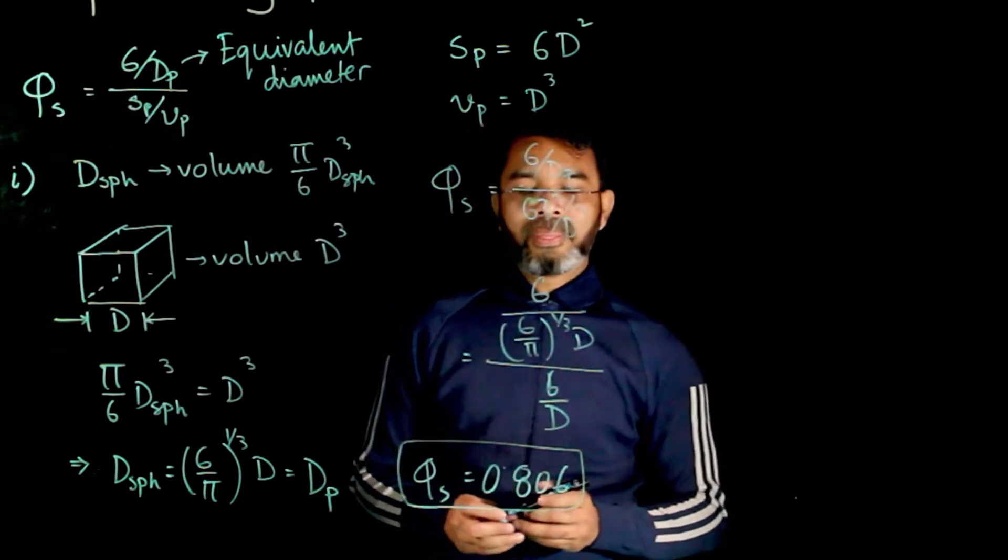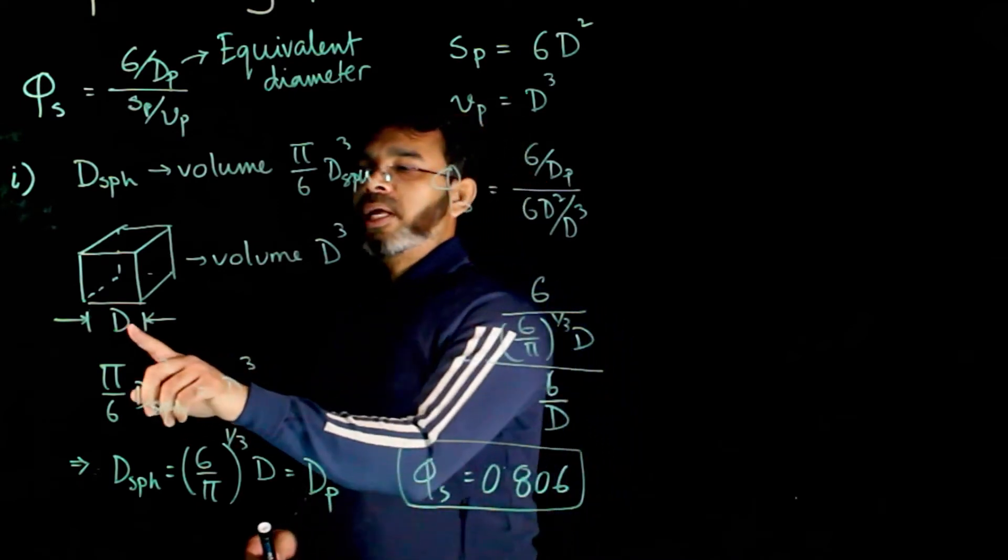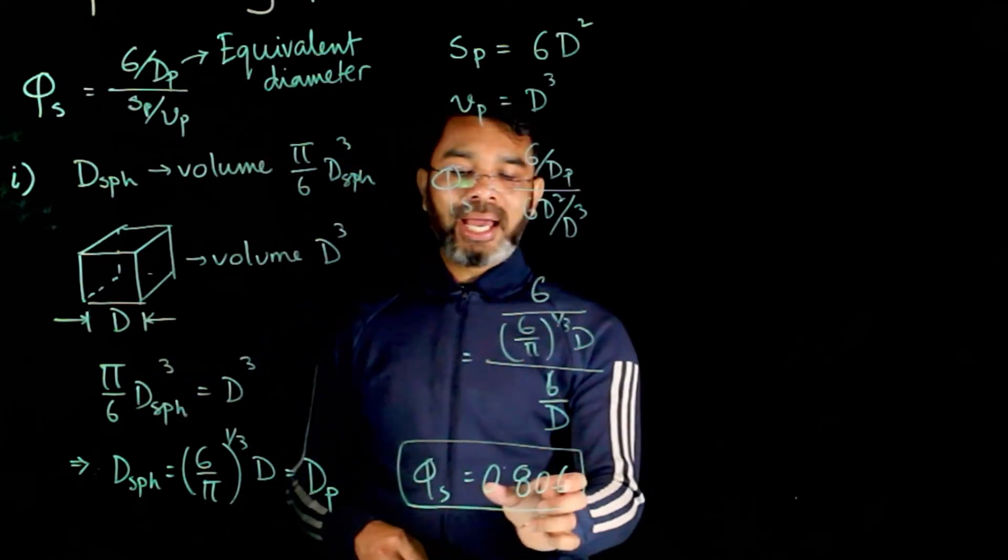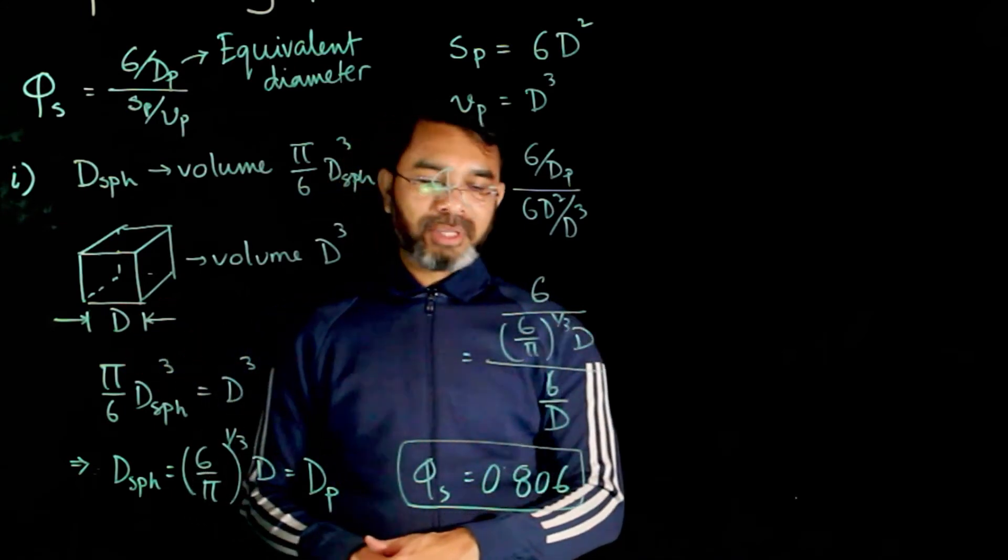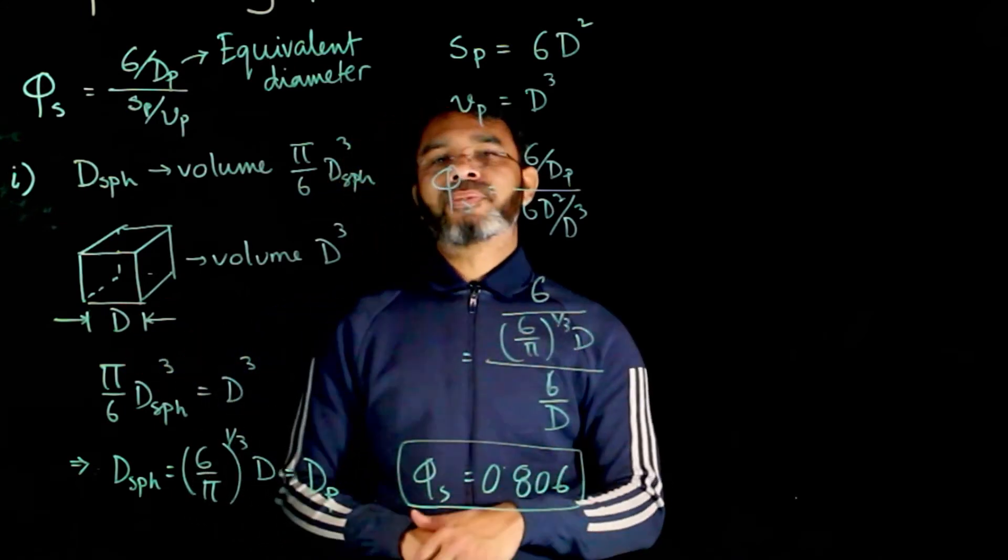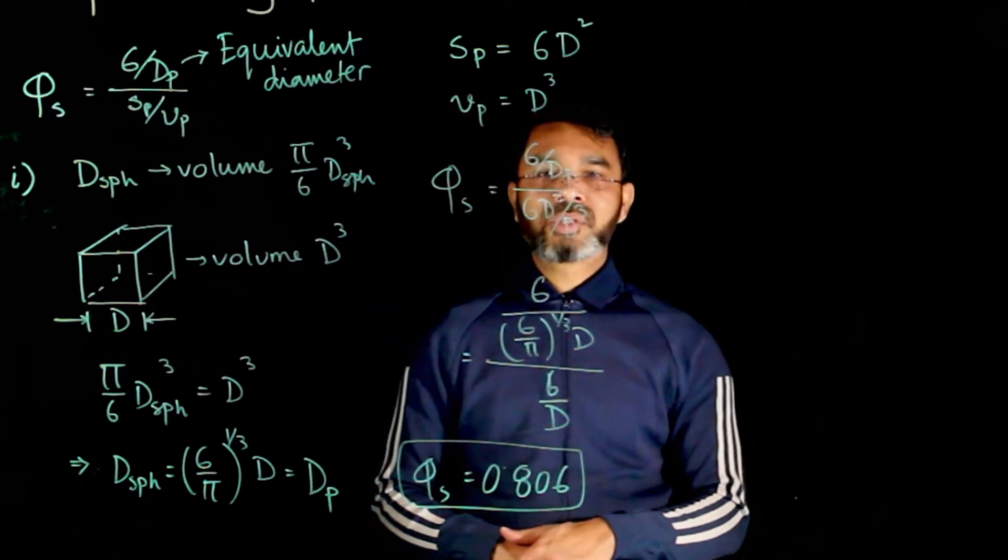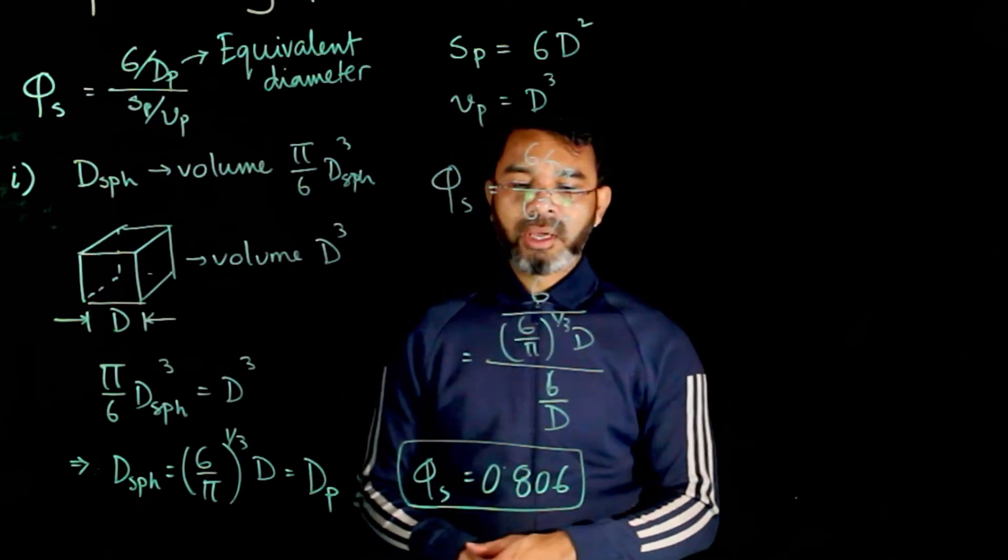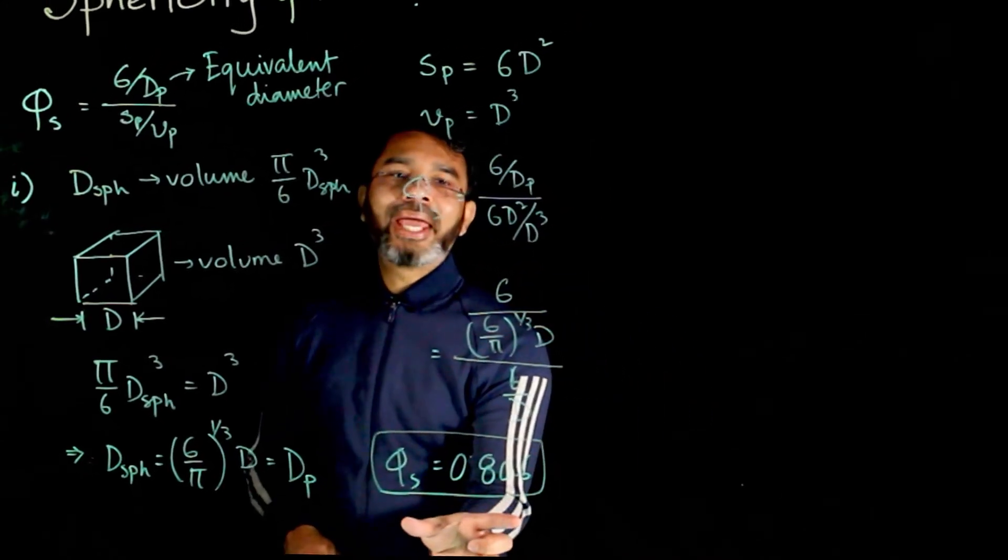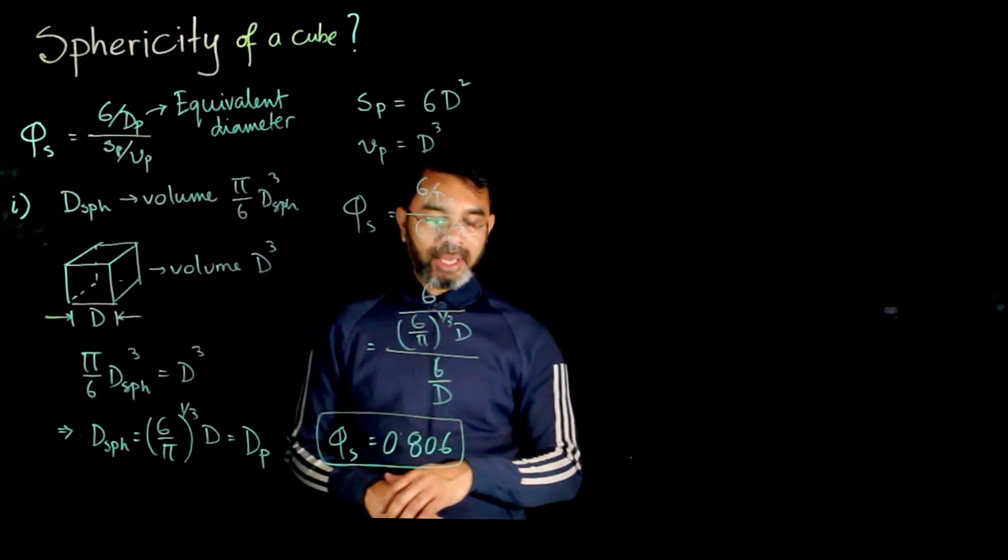Do remember one thing, that this sphericity value of the cube does not have any term d, meaning that it is independent of the size of the cube. And that is the basic definition of sphericity, that sphericity of a particle is independent of its size. It depends only on its shape. So this is one of the ways to define the equivalent diameter and get the sphericity of the particle.